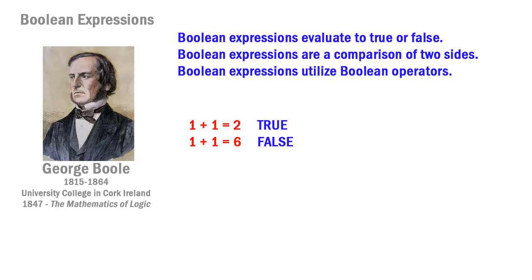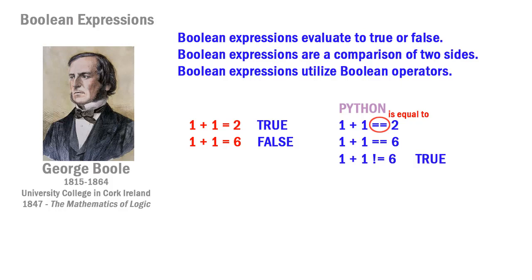In Python we write equals as a double equals sign, so 1 + 1 == 2 is the Boolean operator for 'is equal to.' We also have the exclamation-equals operator: 1 + 1 != 6 is true because exclamation-equals means 'not equal to.' In most languages the exclamation mark is the not operator. The other operators are: less than (e.g., 2 + 2 < 5, which is true) and less than or equal to (e.g., 2 + 3 <= 5, which is also true).